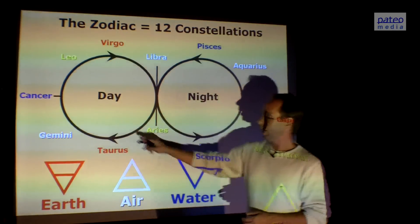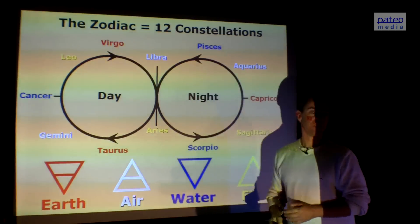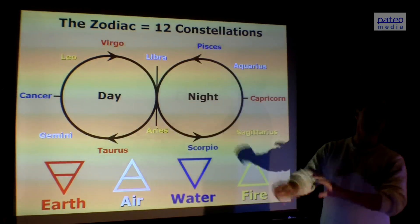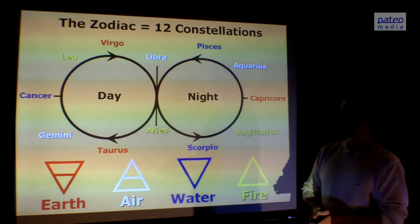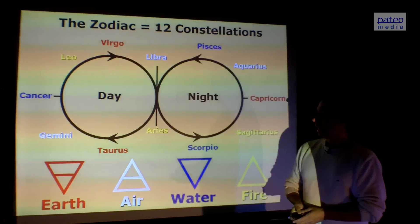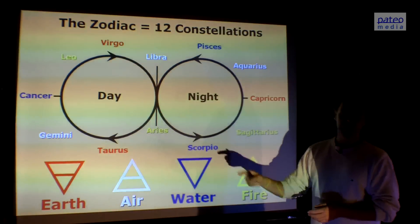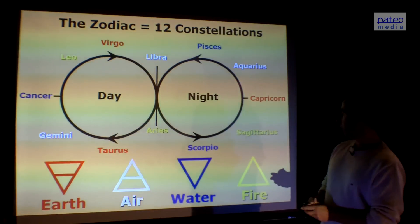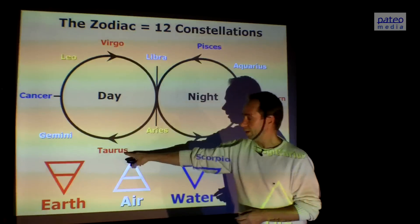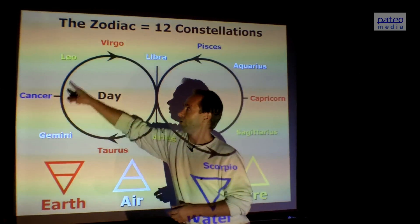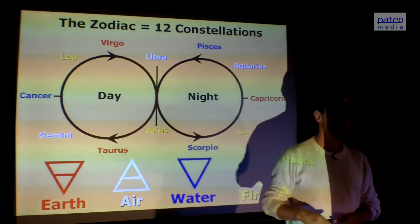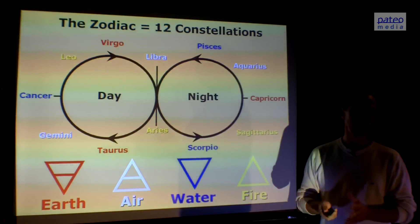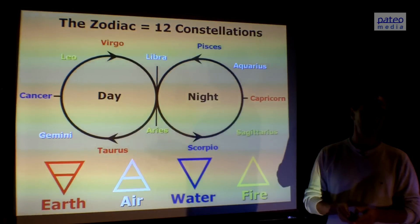We see Cancer all the way here, which is the start of summer at the northern hemisphere, and Capricorn at the other side, the start of winter. We also see that the sequence is according to the cycle — Earth, then air, then water, then fire — and it continues. So the sequence is exactly right. Our forefathers knew about this sequence.